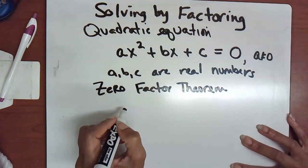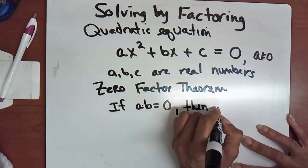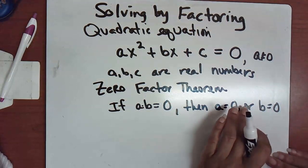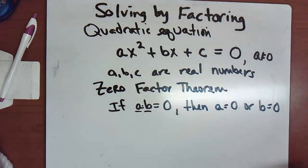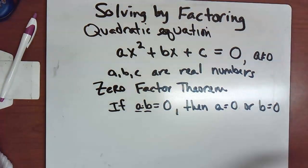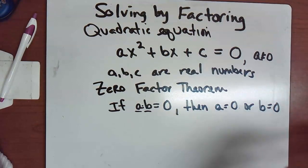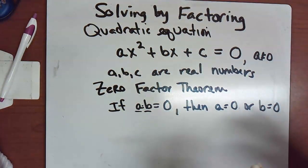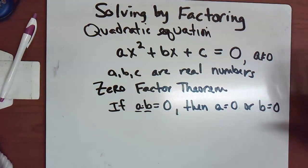The zero factor theorem says: if a × b = 0, then a = 0 or b = 0. This makes sense because anything times zero is zero. So if two factors multiplied together equal zero, then one of those factors must equal zero — you set each factor equal to zero. We use the zero factor theorem to solve quadratic equations by factoring.